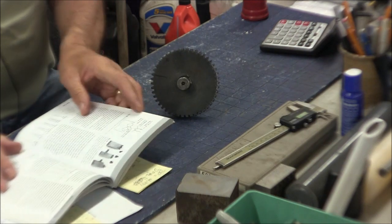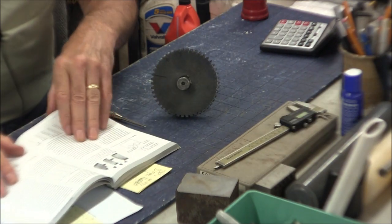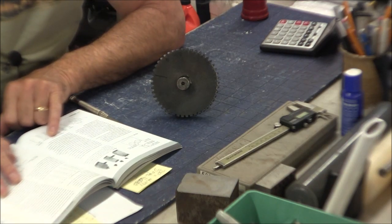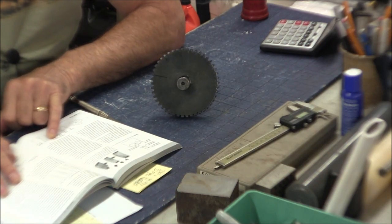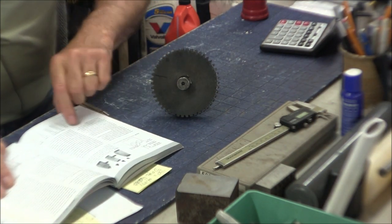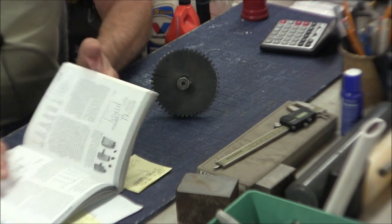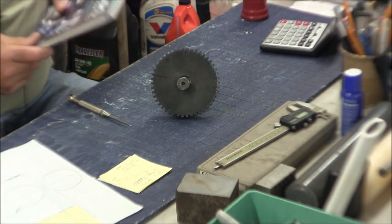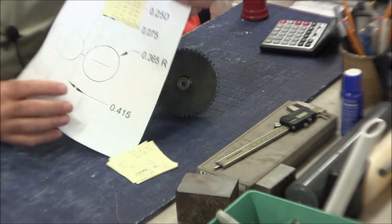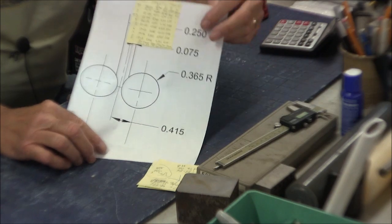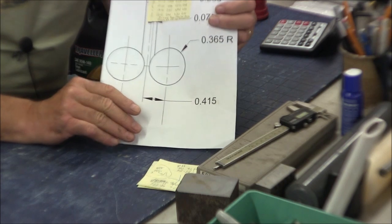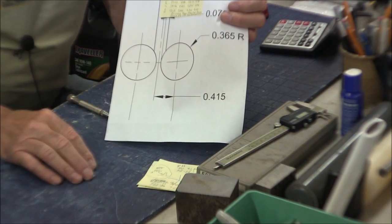So using a chart like that, and this book, by the way, doesn't have the right chart for what I need. This particular one has a 20 degree pressure angle chart and it has a 30 degree. I happen to need a 14 and a half degree pressure angle chart, which I found online. And I used that chart to determine the dimensions for my cutter.